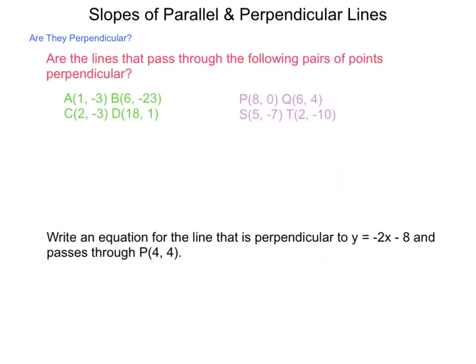Are the lines that pass through the following pairs of points perpendicular? Let's begin again with line segment or the line that passes through A, B. Our rise from negative 3 to negative 23, slope of AB is equal to negative 20 divided by the run from 1 to 6 is 5. Negative 20 divided by 5 is negative 4.